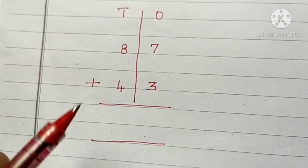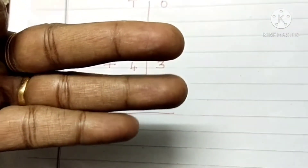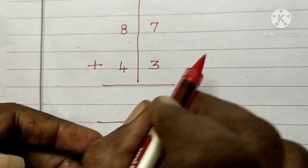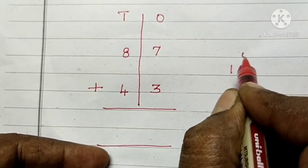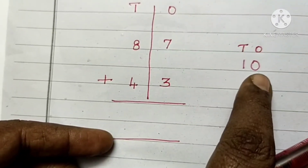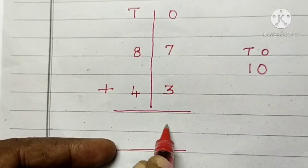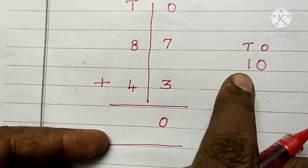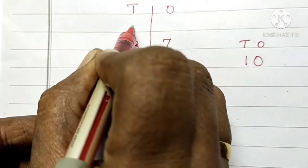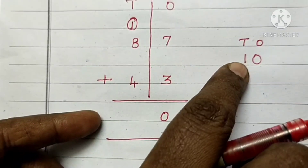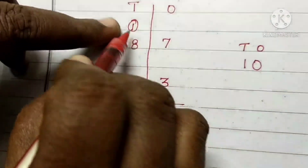Add the 1's column. 7 in the mind, 3 in the fingers. After 7: 8, 9, 10. Place the digit 0 under the 1's column. We carry the digit 1 over the tens column. Write 1 here. Do you know children? 8 plus 1?